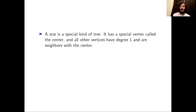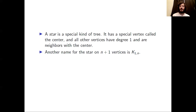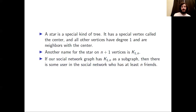We've seen forests and trees, and we know that paths — being acyclic and connected — are a special kind of tree. Another special kind of tree is a star. A star has a special vertex called the center, and all other vertices have degree one and are neighbors with the center. Another name for the star on n+1 vertices is K_{1,n}, the complete bipartite graph with parts of size 1 and n. In a social network, if the graph has a star on n+1 vertices as a subgraph, then some user in the network has at least n friends.